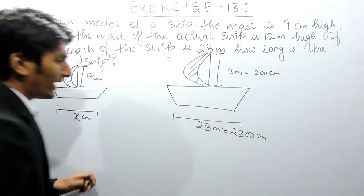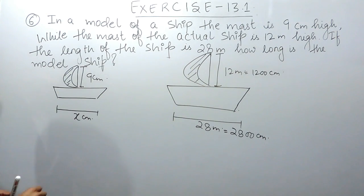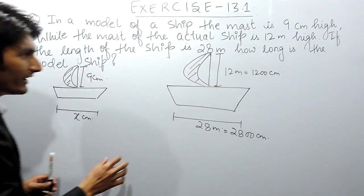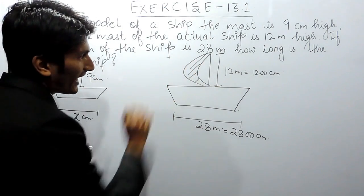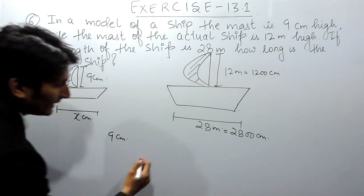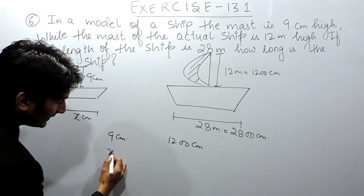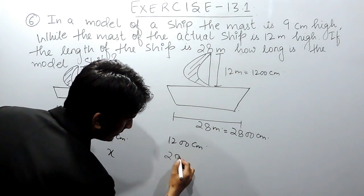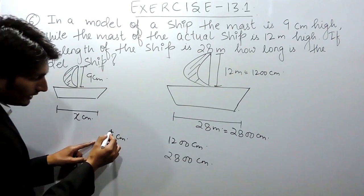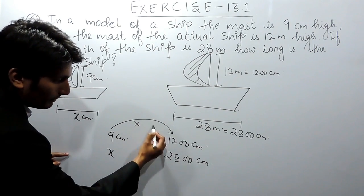The question says that this model ship has been enlarged to make this actual ship. You have to find how many times this ship has been enlarged. The mast of the model ship is 9 centimeters, and in the actual ship this is 1200 centimeters. So you have to find the length of the model ship if the length of the actual ship is 2800 centimeters.